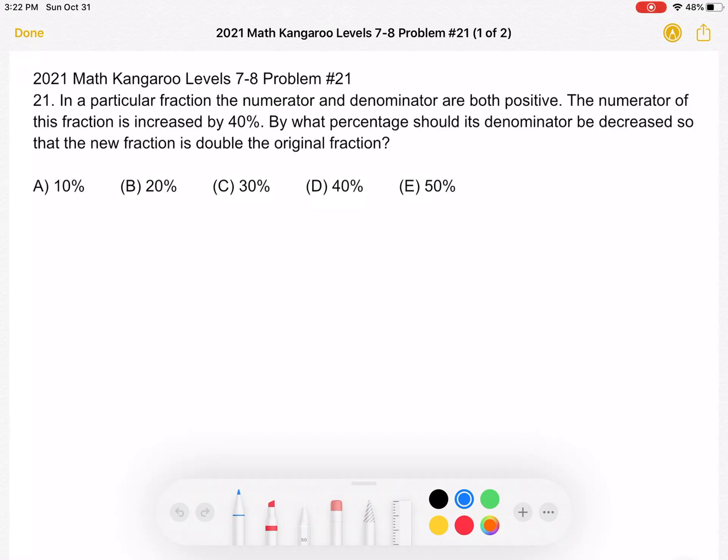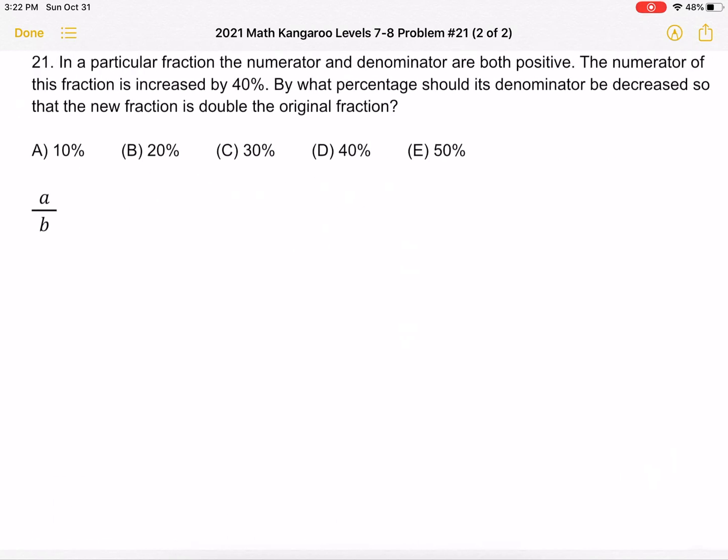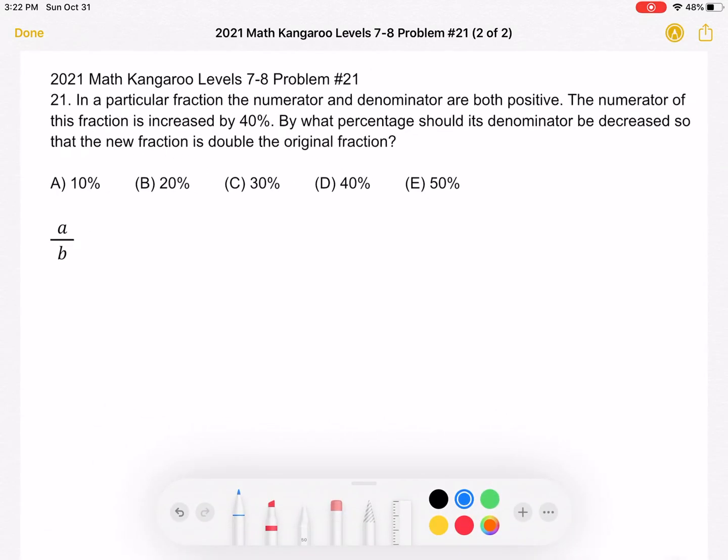A, 10%, B, 20%, C, 30%, D, 40%, or E, 50%. This is the problem as it originally appeared on the test. And here is where we'll be doing the solution.